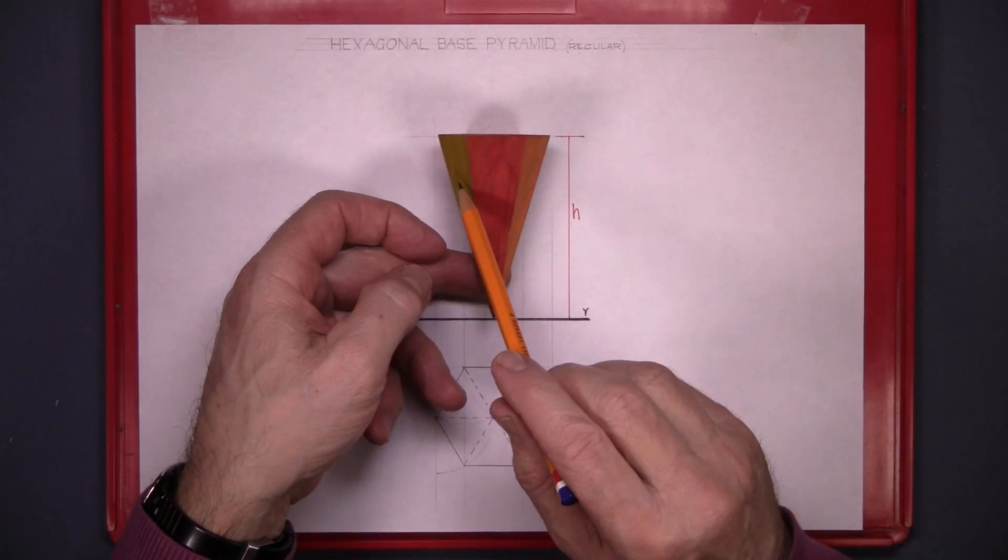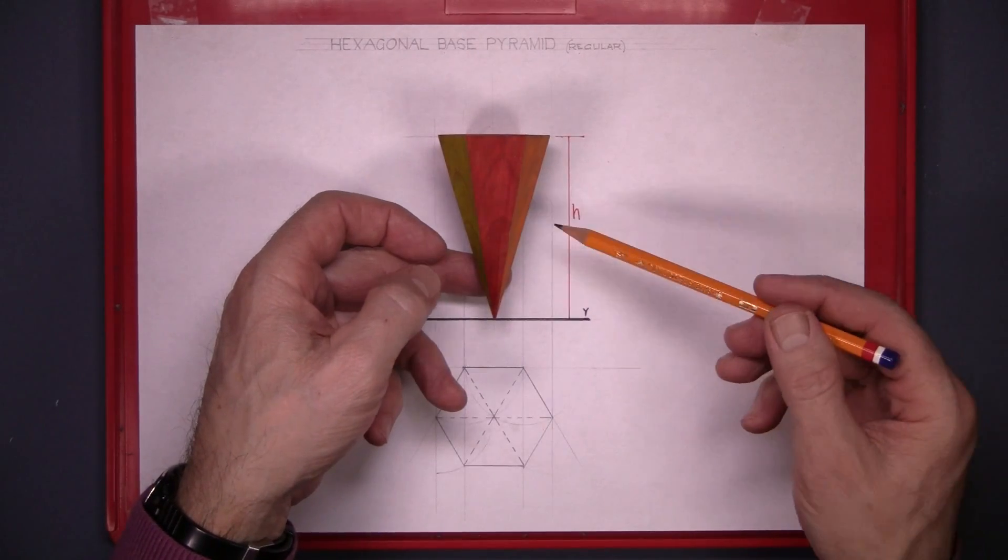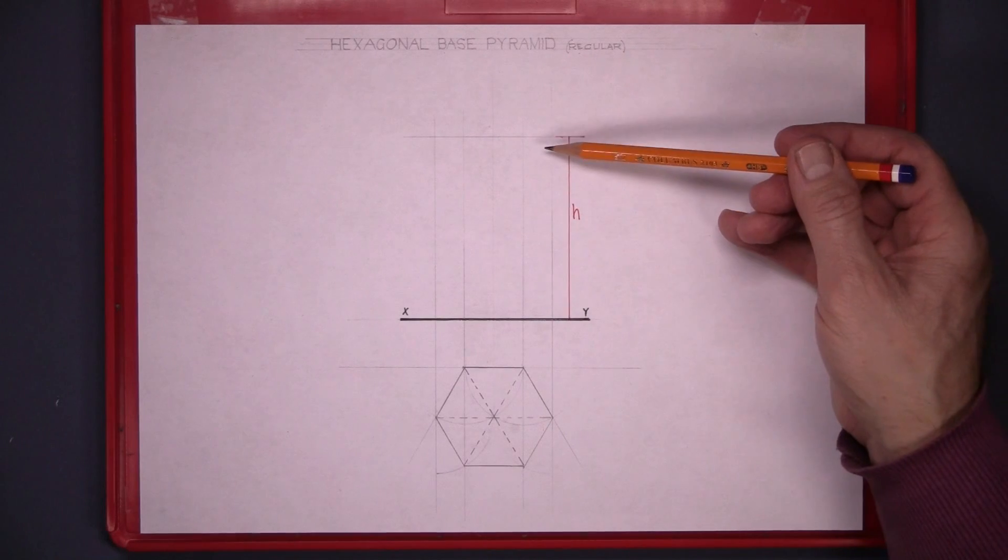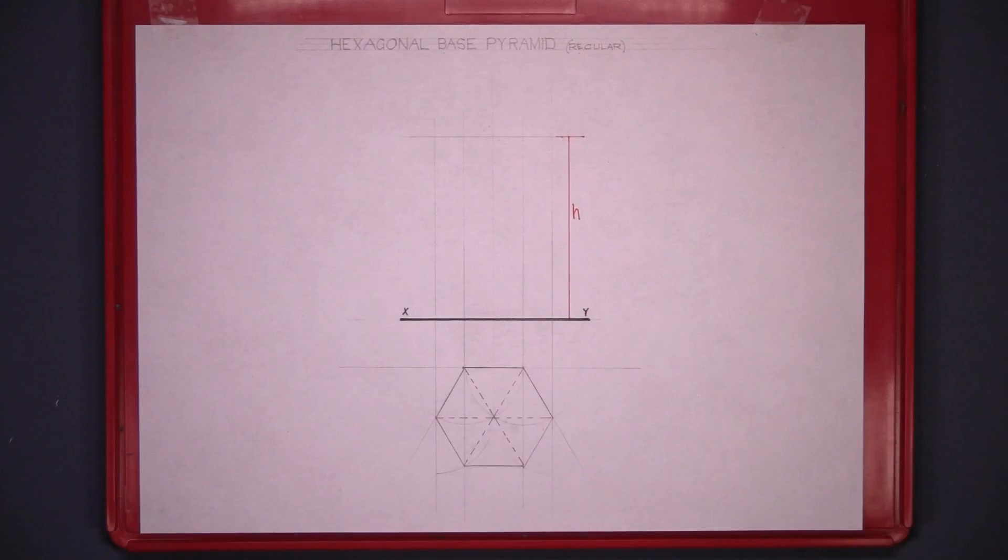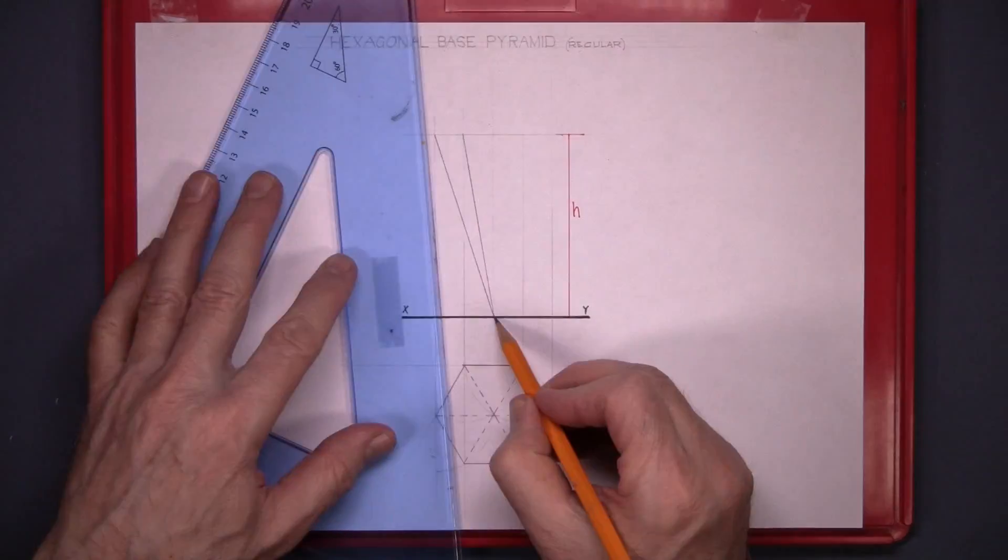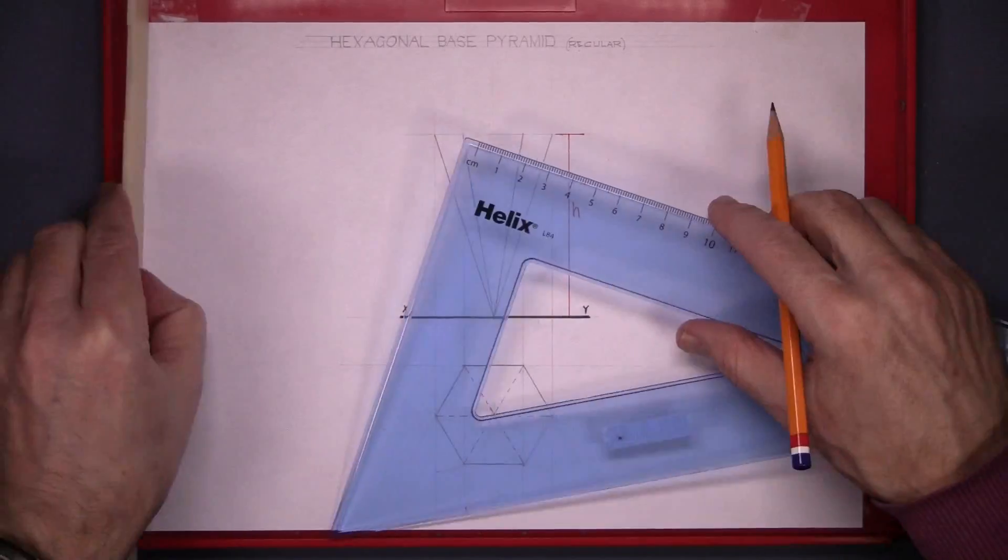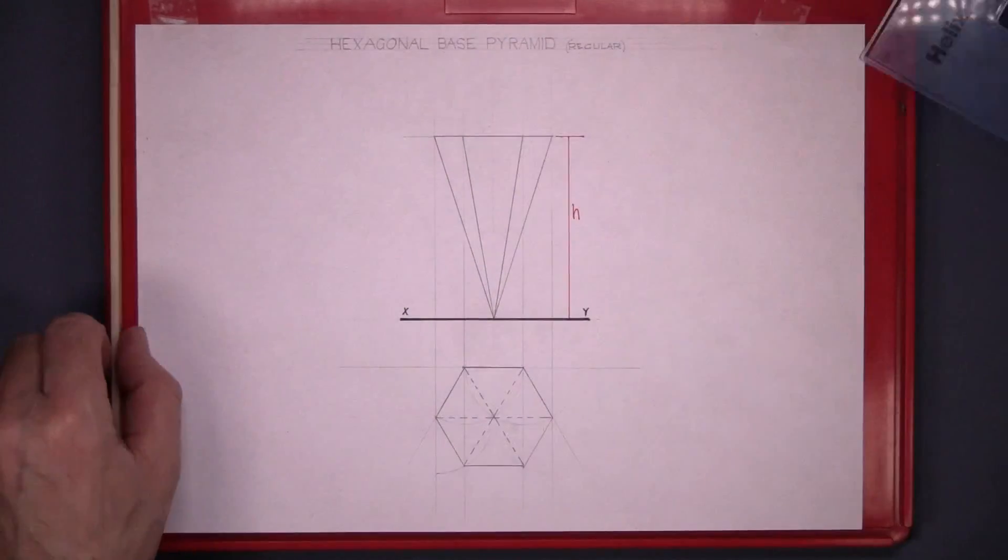The red surface, the orange surface, and the yellow surface. So bring the points up from the plan and bring the height across. And join them back down to the point. And that's the elevation complete there.